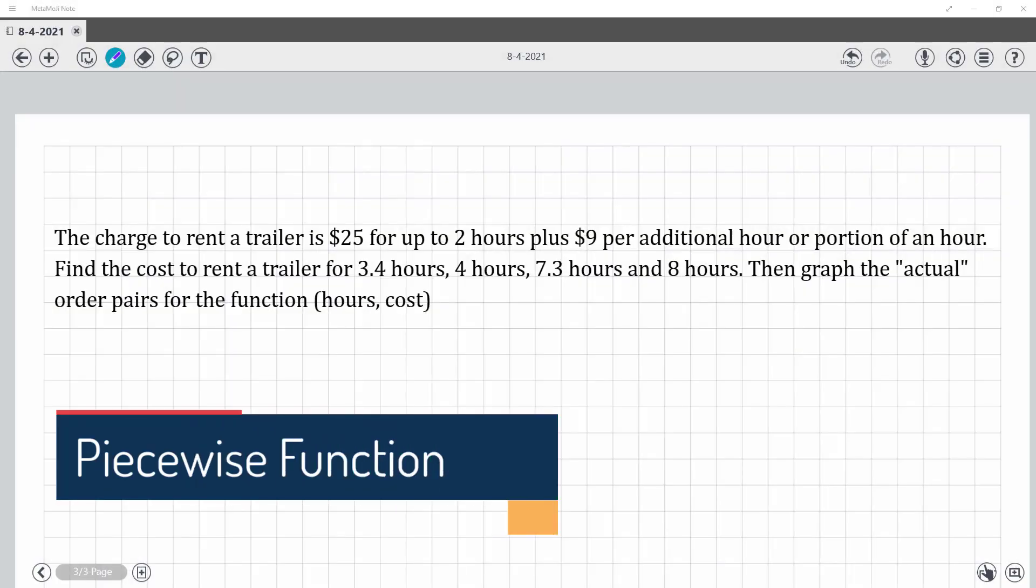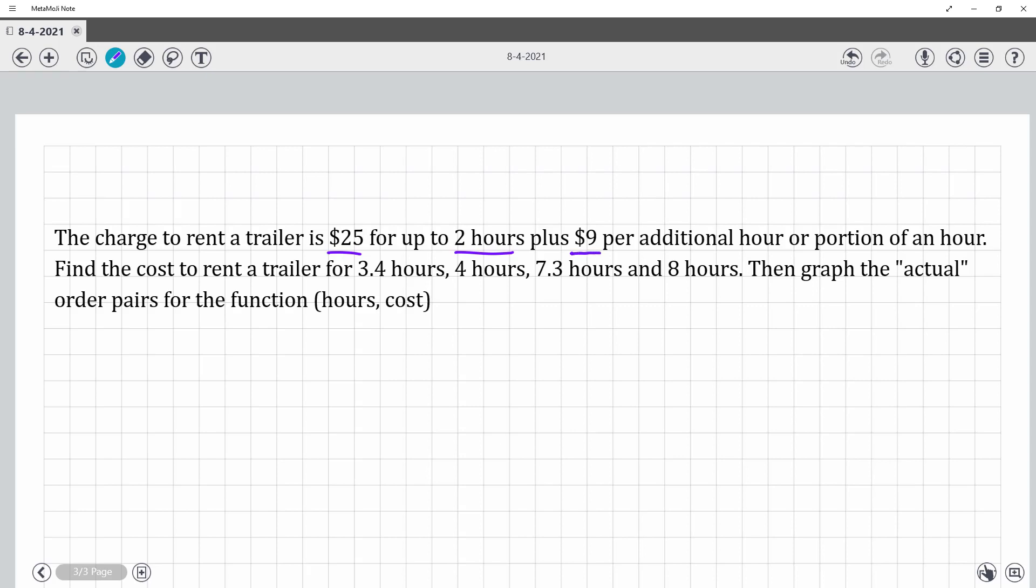Alright, this problem was a little confusing to me. So it says the charge to rent a trailer is $25 for up to 2 hours plus $9 per additional hour.